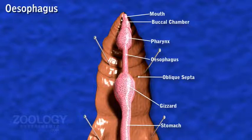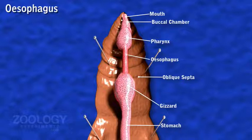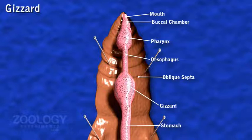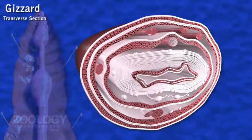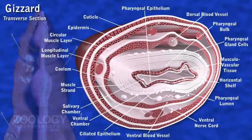The esophagus or gullet is situated behind the pharynx. It is a short, narrow, thin-walled tube extending up to the seventh segment. The esophagus leads into a bulging oval, thick-walled muscular organ, the gizzard, situated in the eighth segment. Its muscular wall consists of circular muscle fibers and it is internally lined by a tough cuticle.